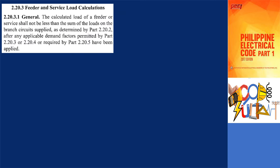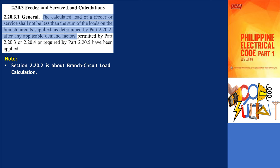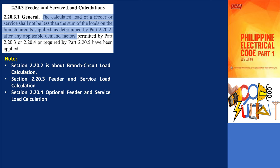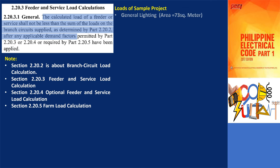The rules of the code for feeder and service load calculation state that the load shall not be less than the sum of the loads on the branch circuits after applying the demand factors permitted in this section, or by the optional feeder and service calculation method, or as required by the farm service calculation. To understand this section, let's apply this to our sample project.